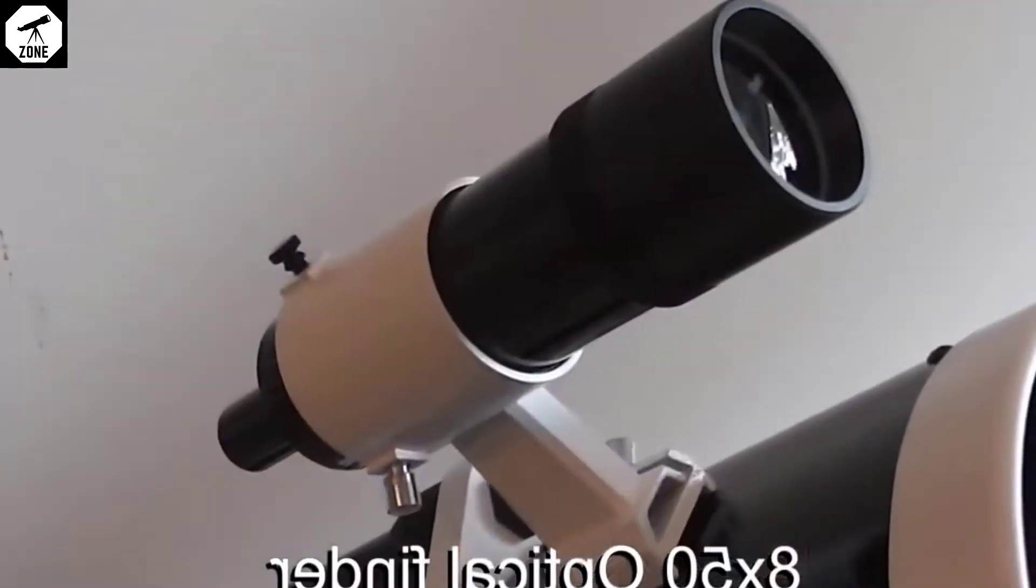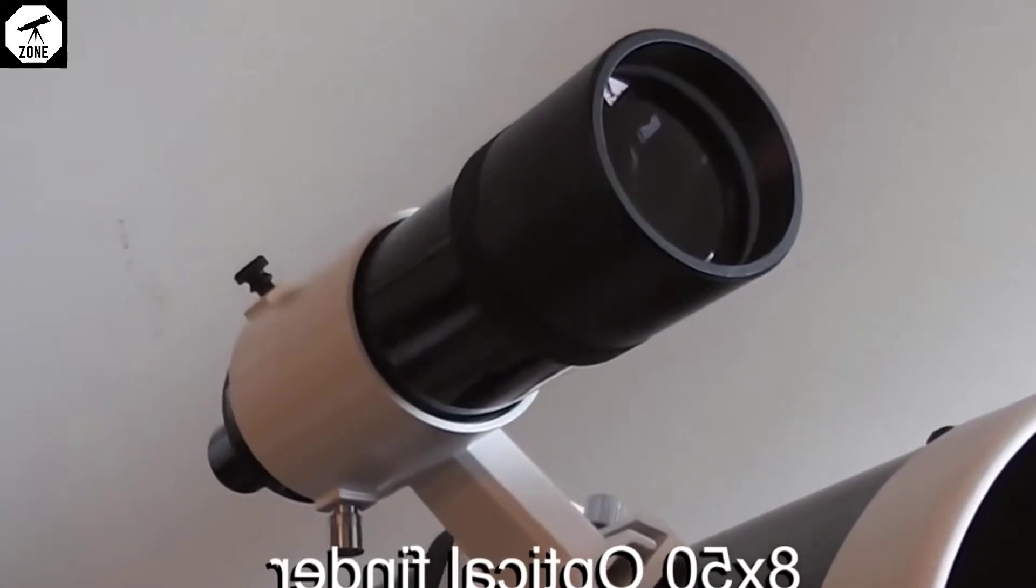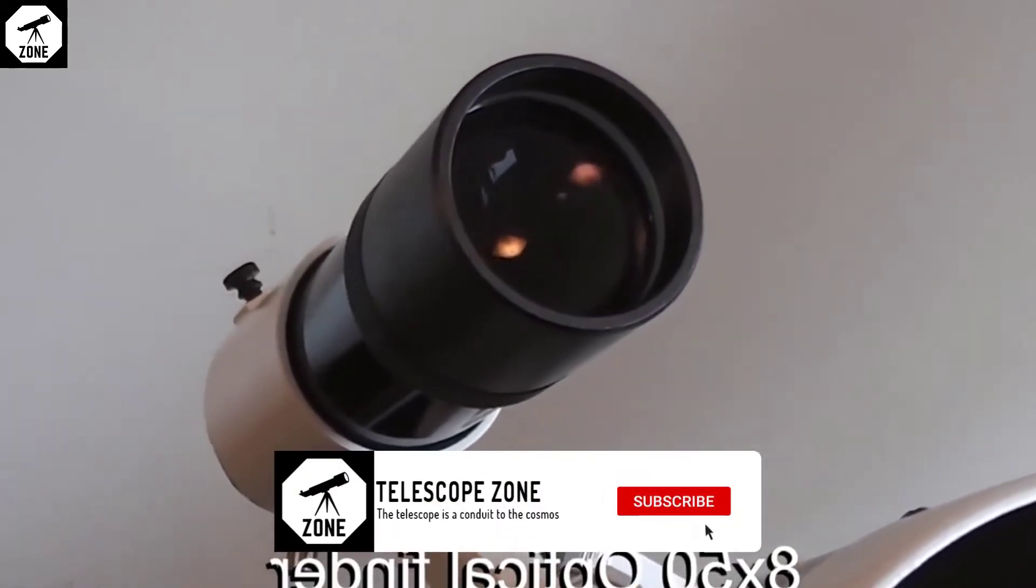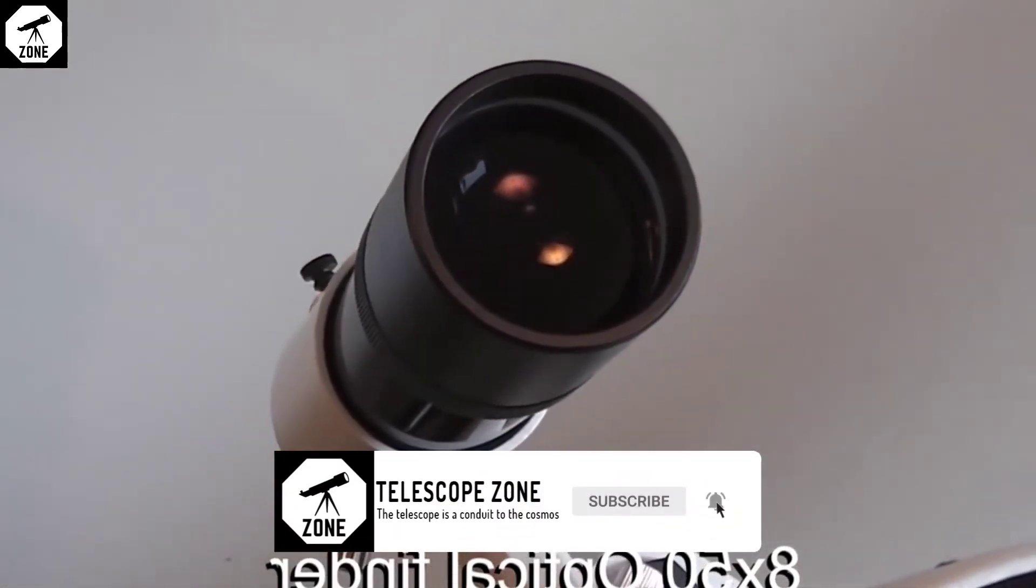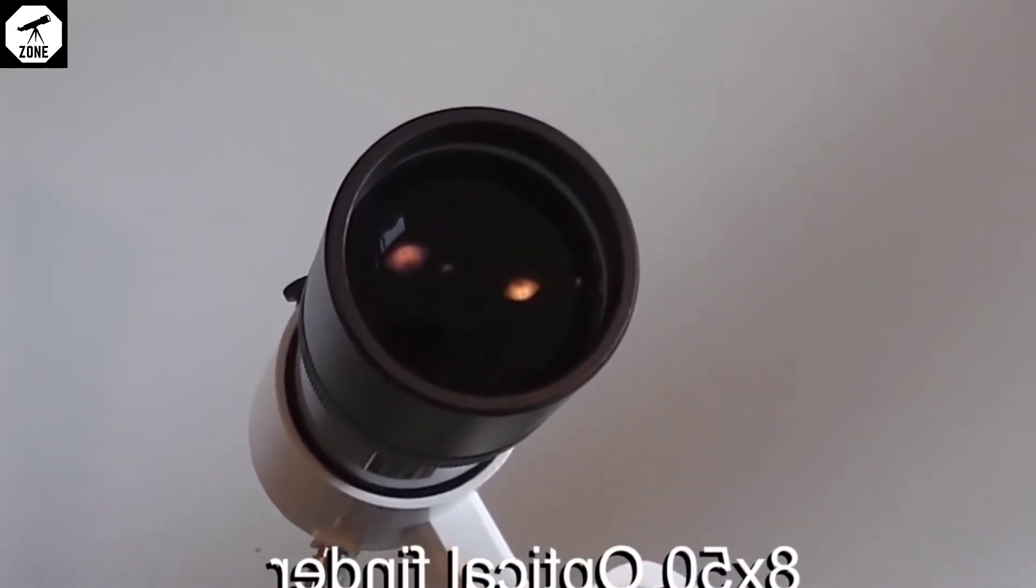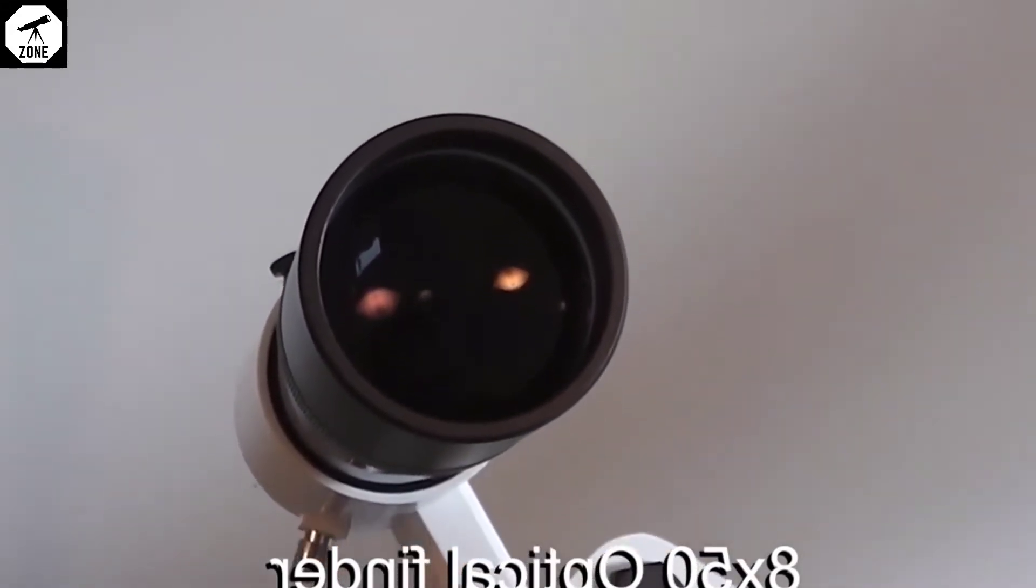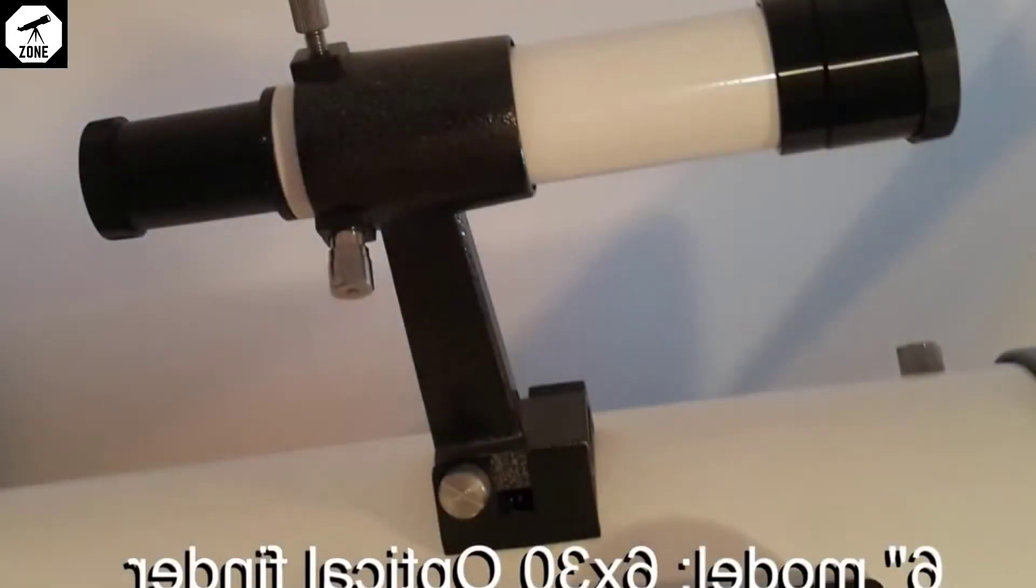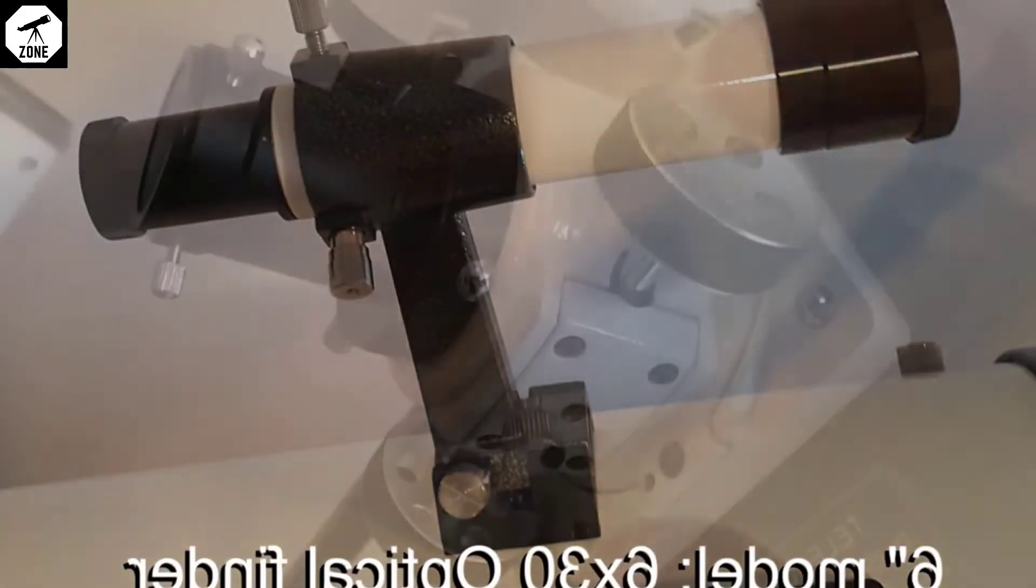An 8x50 optical finder. This is mounted on the side of the telescope and sees a very wide field of view. The crosshair inside lets you centre the main telescope on an object. The 6 inch model comes with a 6x30 finder.